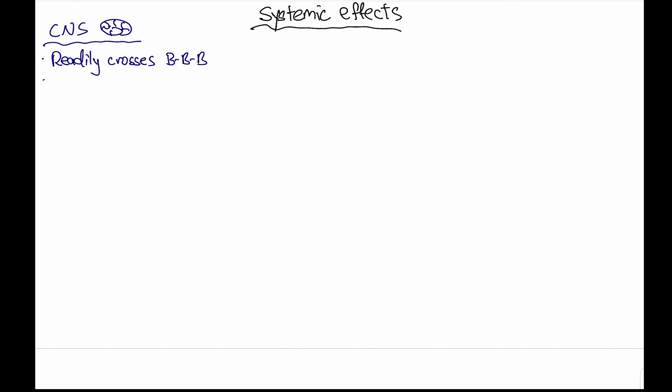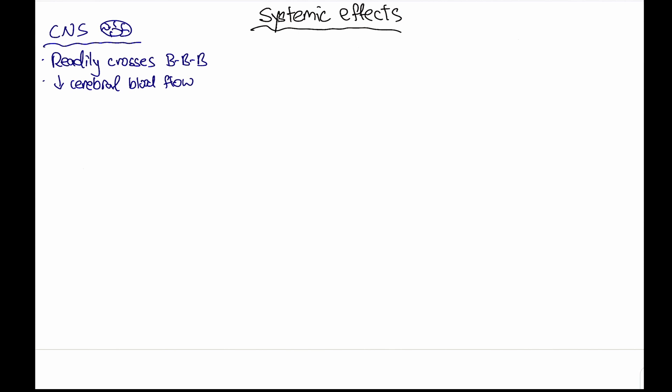Now in terms of propofol and its effect on body systems, I think it's good to have a structured approach to help you remember. I normally use the systems-based top-down approach. So if we were to look at propofol starting up in the CNS, propofol can actually cross the blood-brain barrier and is also known to have cerebral protective effects due to its ability to decrease cerebral blood flow and cerebral metabolic rate. This in turn decreases the intracranial pressure in the brain and also decreases cerebral oxygen consumption.